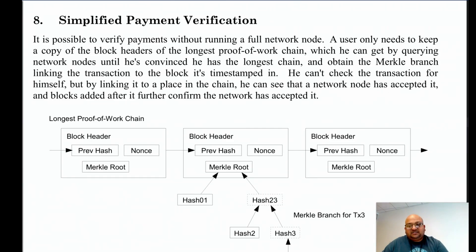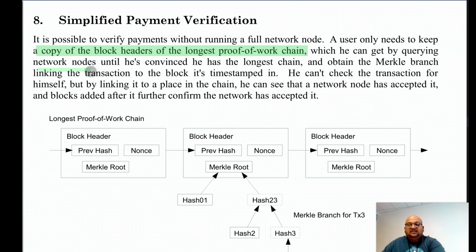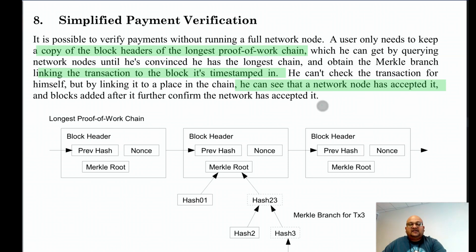Is it possible for a participant in the network to verify a payment without running a full node? Yes, you can do this. We simply need to get a copy of the longest chain, which we can do by asking all the other full nodes in the network, and look at the branch linking the transaction we want to verify to the block in which it occurs. The presence of this transaction in a block implies that the network had accepted it in the past, and all the blocks after it that were accepted by the network only reinforce the acceptance of that transaction.